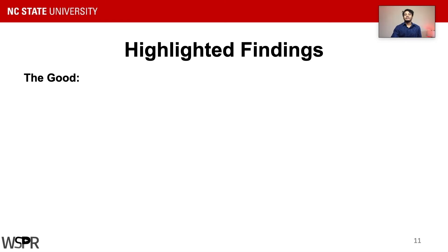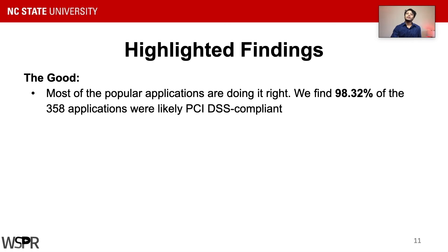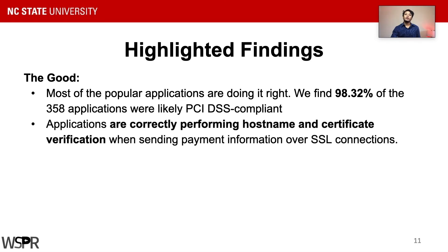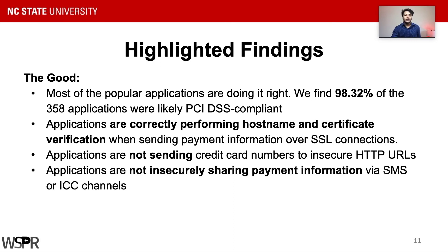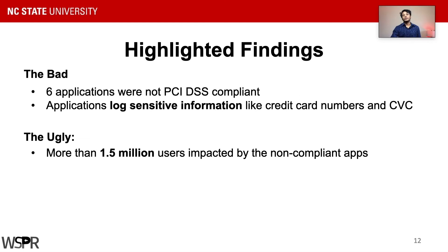Here are some of our highlighted findings. We found most applications are doing it right, which indicates popular applications mandate good coding practices aligned with industry regulations. We found all apps were performing hostname verification and certificate validation correctly. They were not using HTTP URLs to send credit card data and were not insecurely sharing them with other applications. However, we did find six applications violating PCI DSS with collectively more than 1.5 million downloads. We also see a common trend of writing sensitive data like credit card numbers in device logs without realizing its implications.